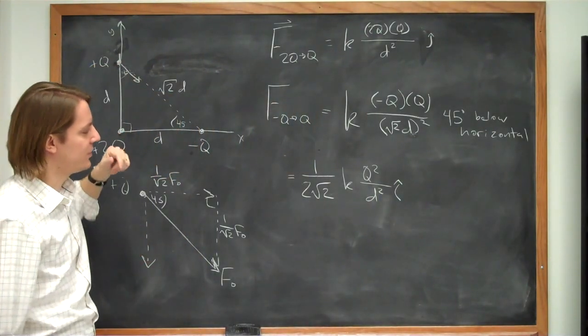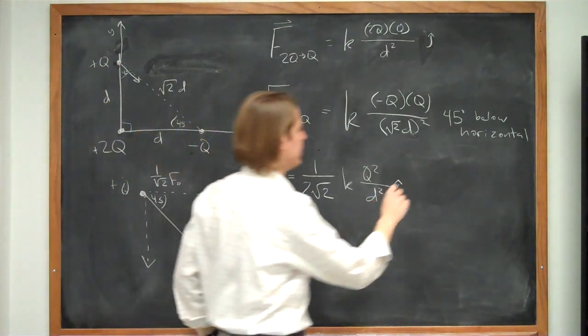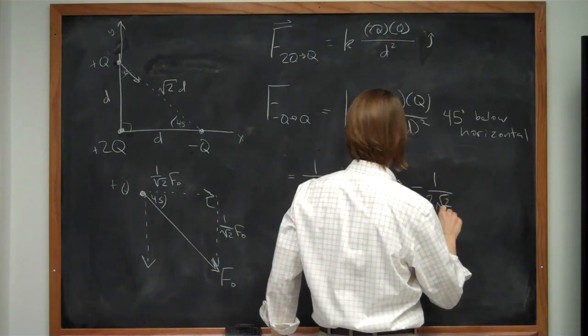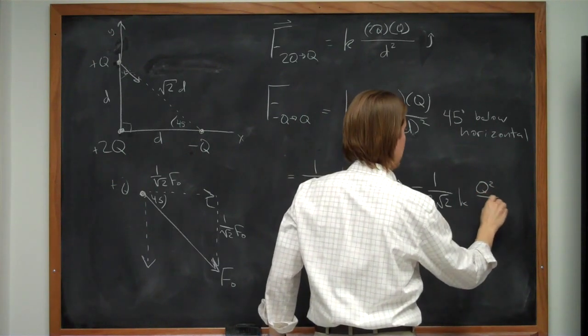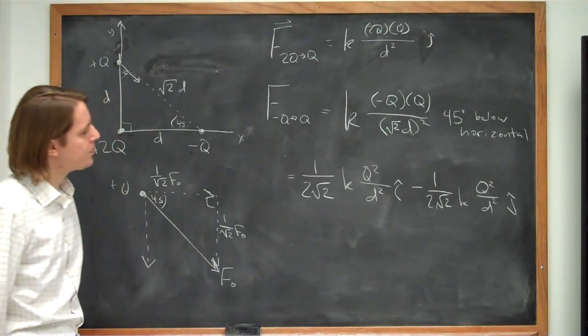The component in the y direction is exactly the same. Except actually it's down. So we'll call it negative. Minus 1 over 2 square root of 2. Okay. kq squared over d squared. In that direction.